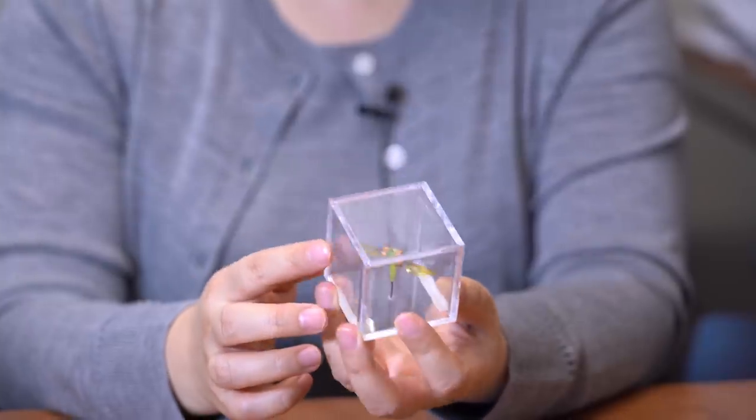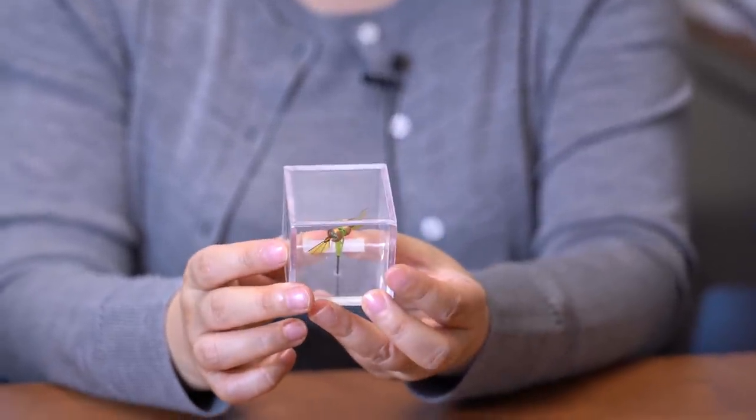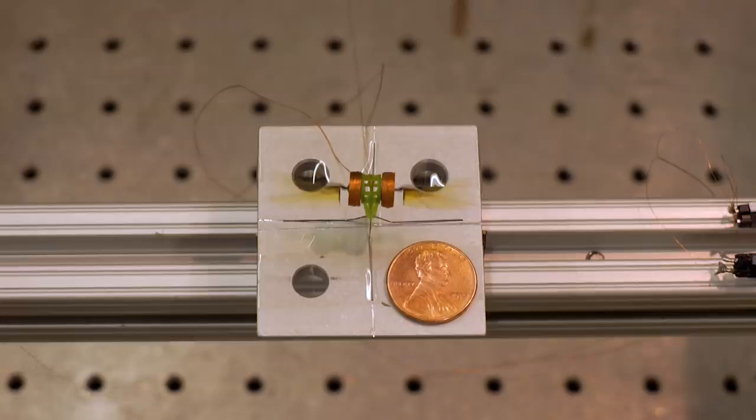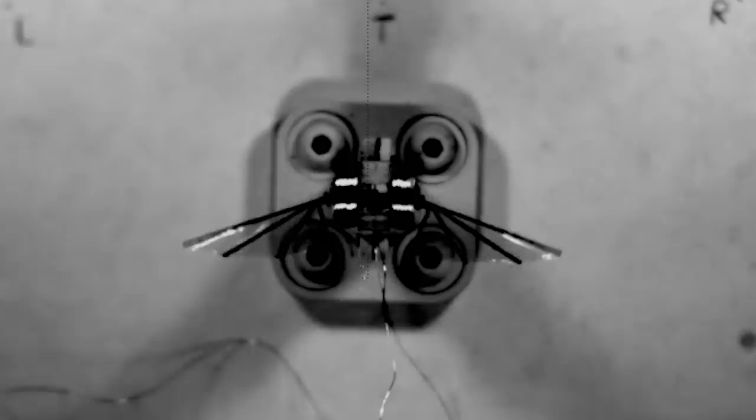We do have smaller models. This one is less than one gram, three to four centimeters wing tip to wing tip. Wing beat frequency is about 160 hertz. So of course, the smaller you get, the higher the wing beat frequency.